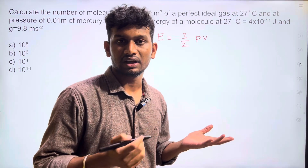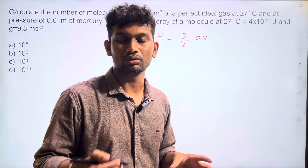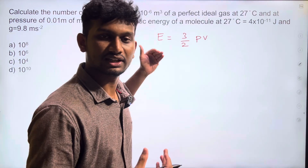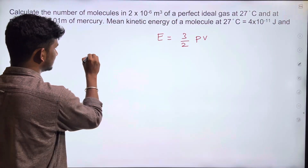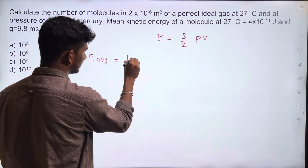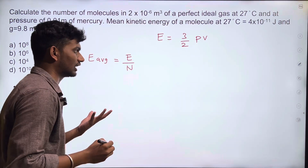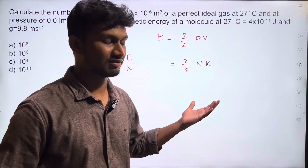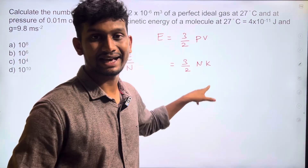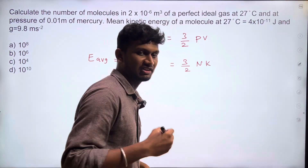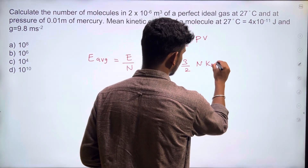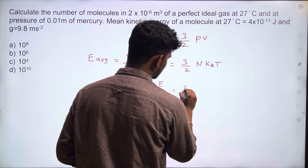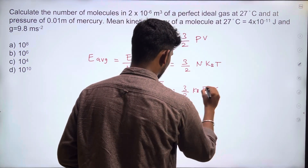Let's say a container has volume V and maintains a particular pressure — it has some kinetic energy. The total kinetic energy gives us the energy. The average kinetic energy is nothing but total energy divided by number of molecules. That is E = 3/2 · N · k_B · T, where N is number of molecules and k_B is Boltzmann's constant. So E / N = 3/2 · k_B · T — this is the average energy, E_avg.